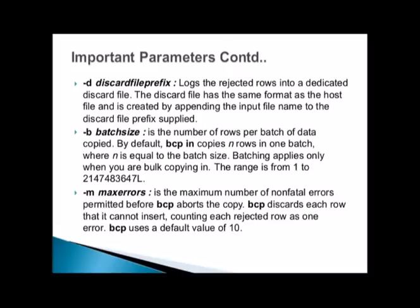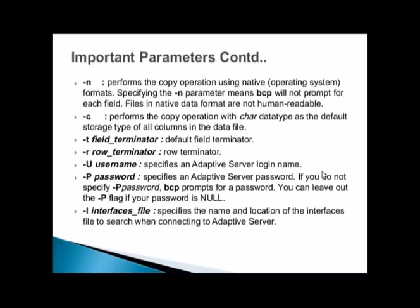The -n flag performs the copy operation using native (operating system) format; specifying -n means BCP will not prompt for each field — it is not human-readable. The -c flag uses character format, meaning every column will be treated as a character type. Field terminator and row terminator are self-explanatory. Username, password, and interfaces file are also self-explanatory.